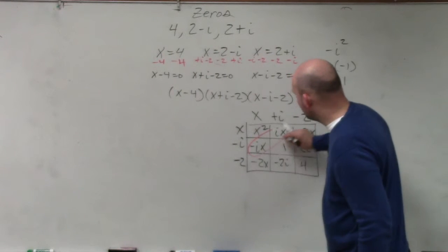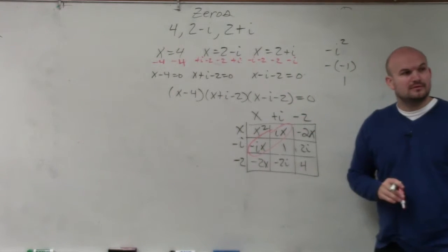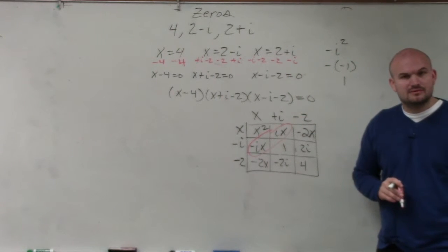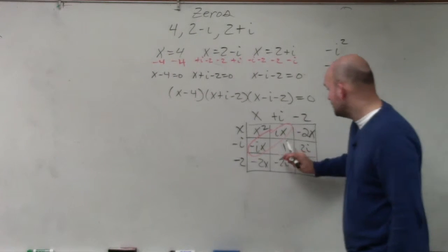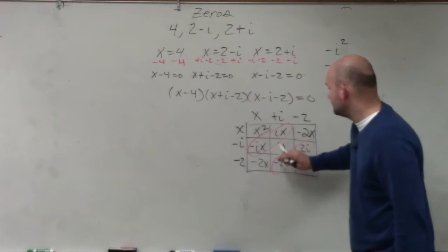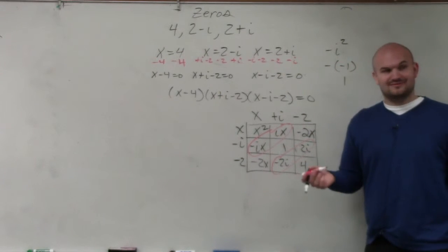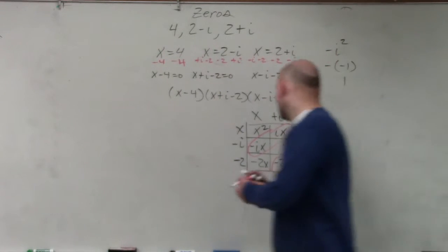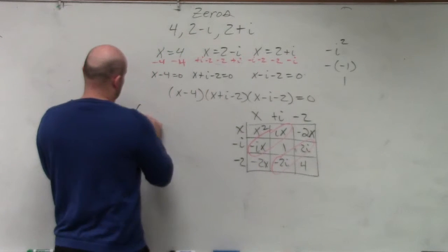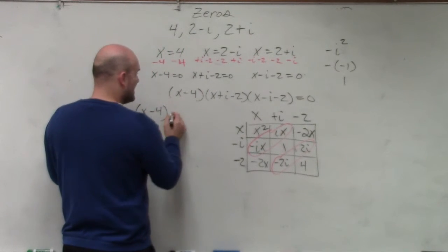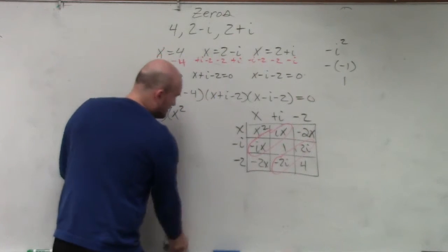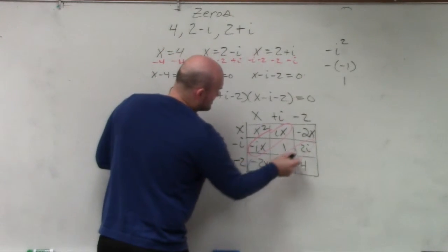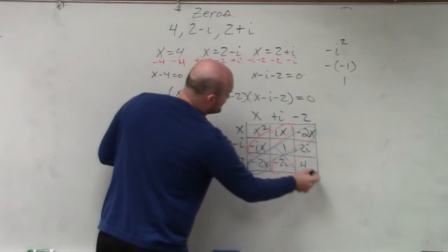Now let's look at the diagonals. Usually the diagonals combine, right? Well, here, what do these combine to? 0x, which is just 0. What do these combine to? 0i, which is just 0. So therefore, I'm left with x minus 4 times x squared. These combine to negative 4x.